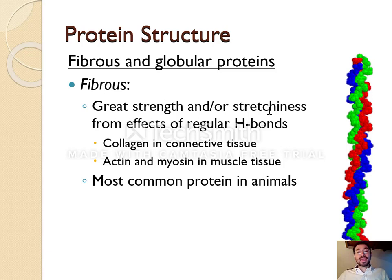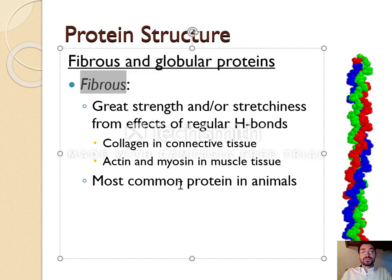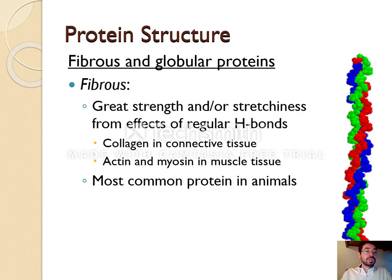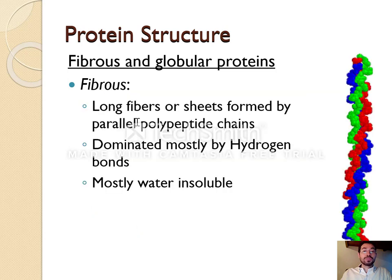Because of their length, fibrous proteins have great strength and stretchiness. Collagen, which helps hold your skin together, is made of fibrous proteins. Actin and myosin in your muscles — if you feel your bicep, you can actually feel the strings — these strings are protein strings. They are fibrous proteins, which are the most common type of proteins in animals. Fibrous proteins are string-shaped, dominated by hydrogen bonds, and mostly made of alpha helices or beta pleated sheets in one long line.